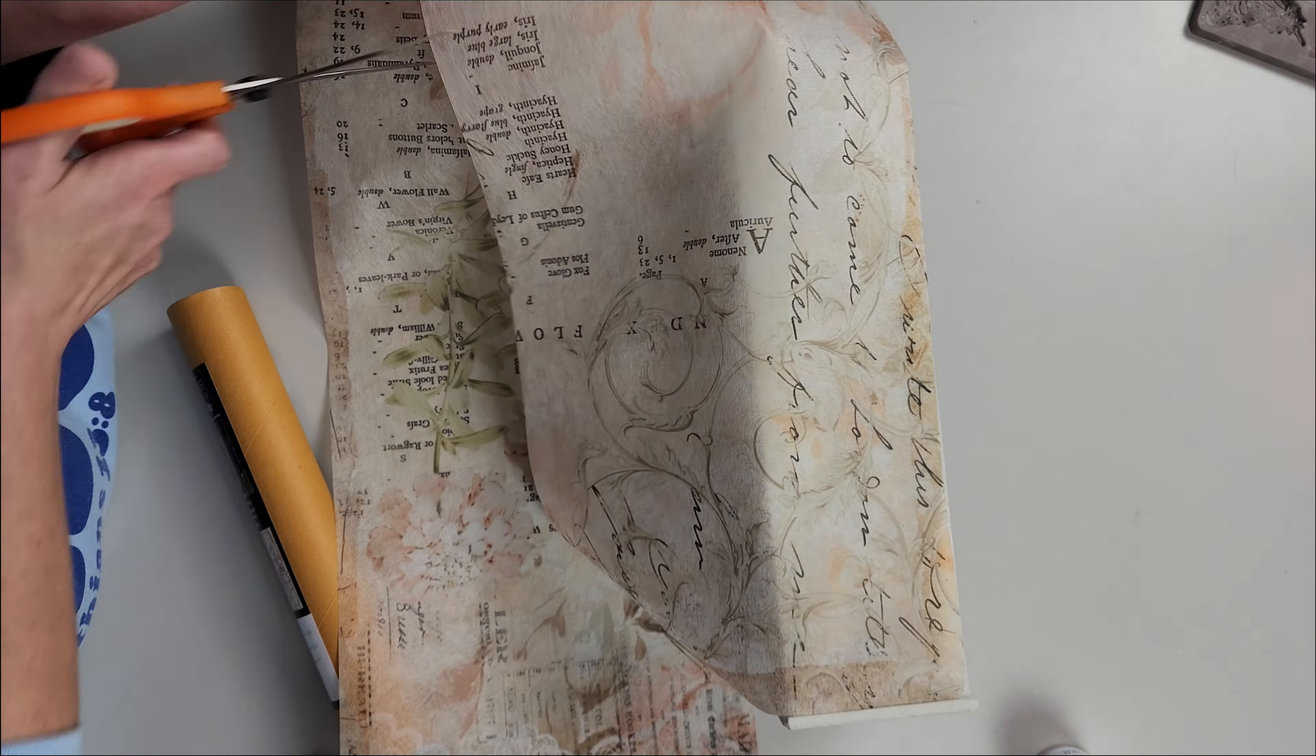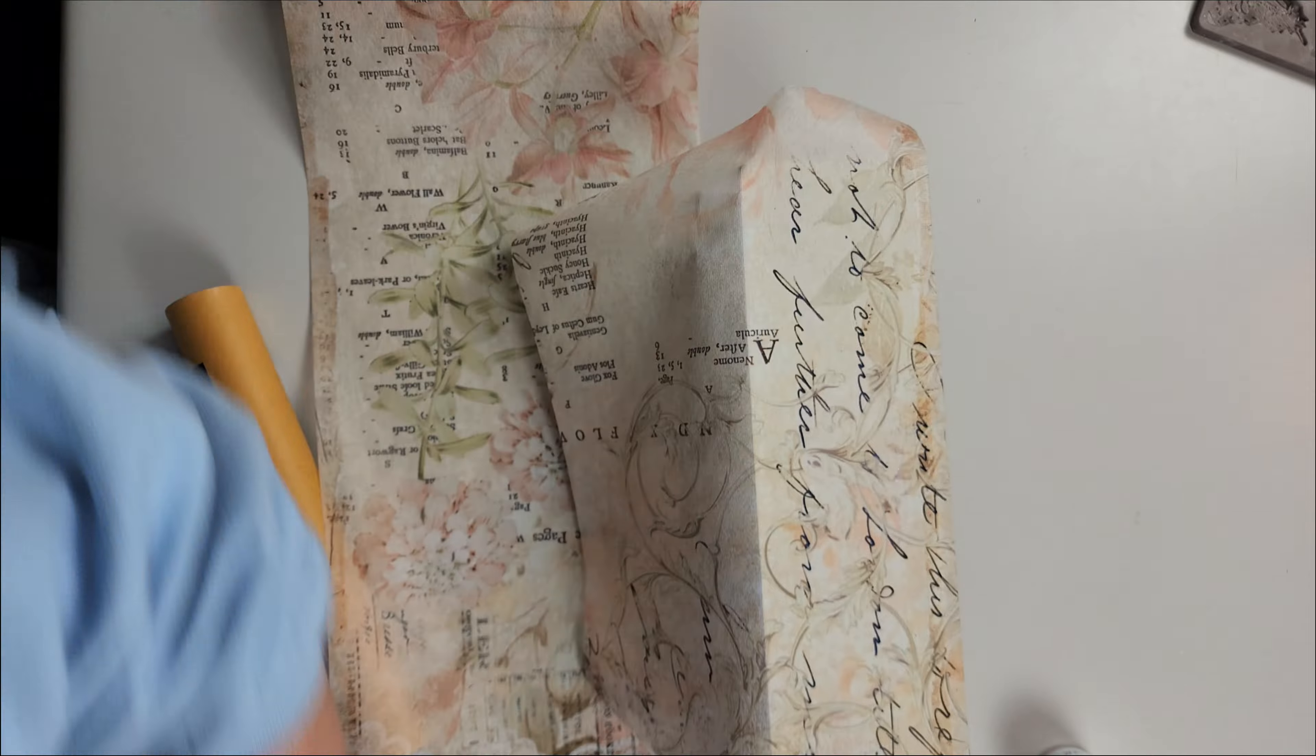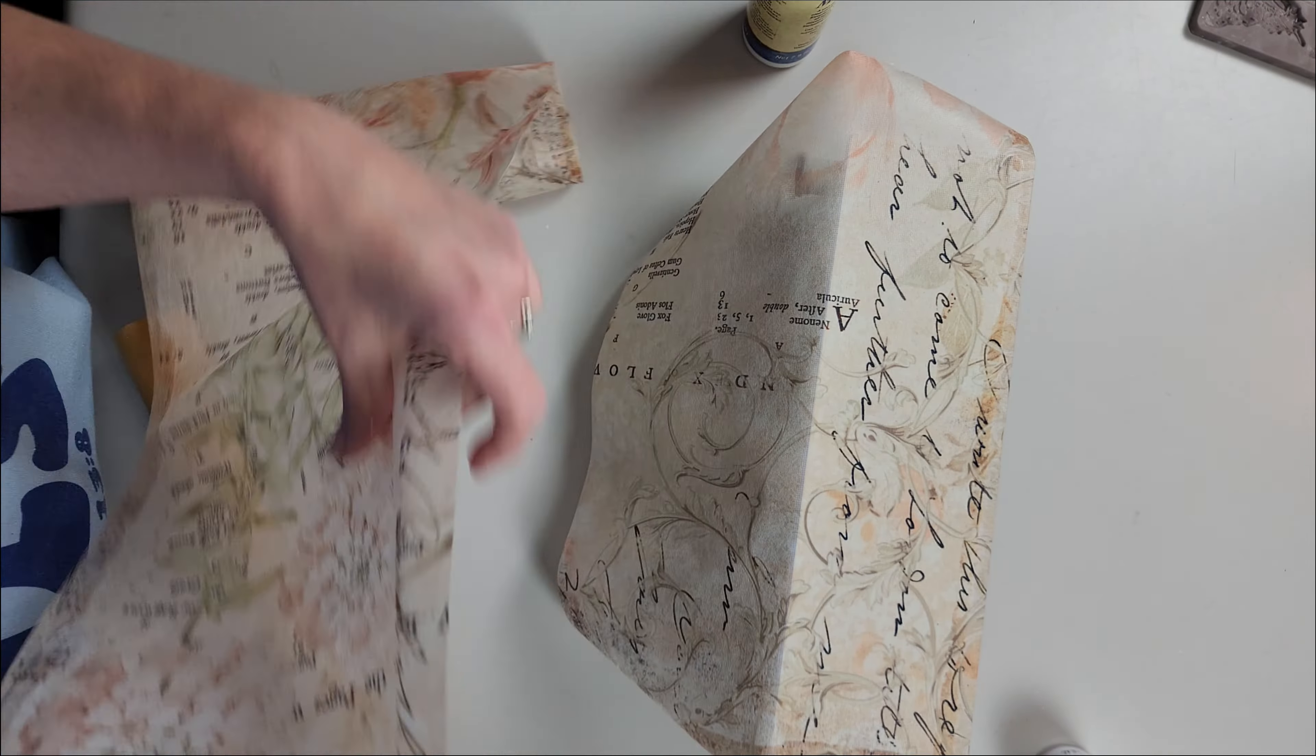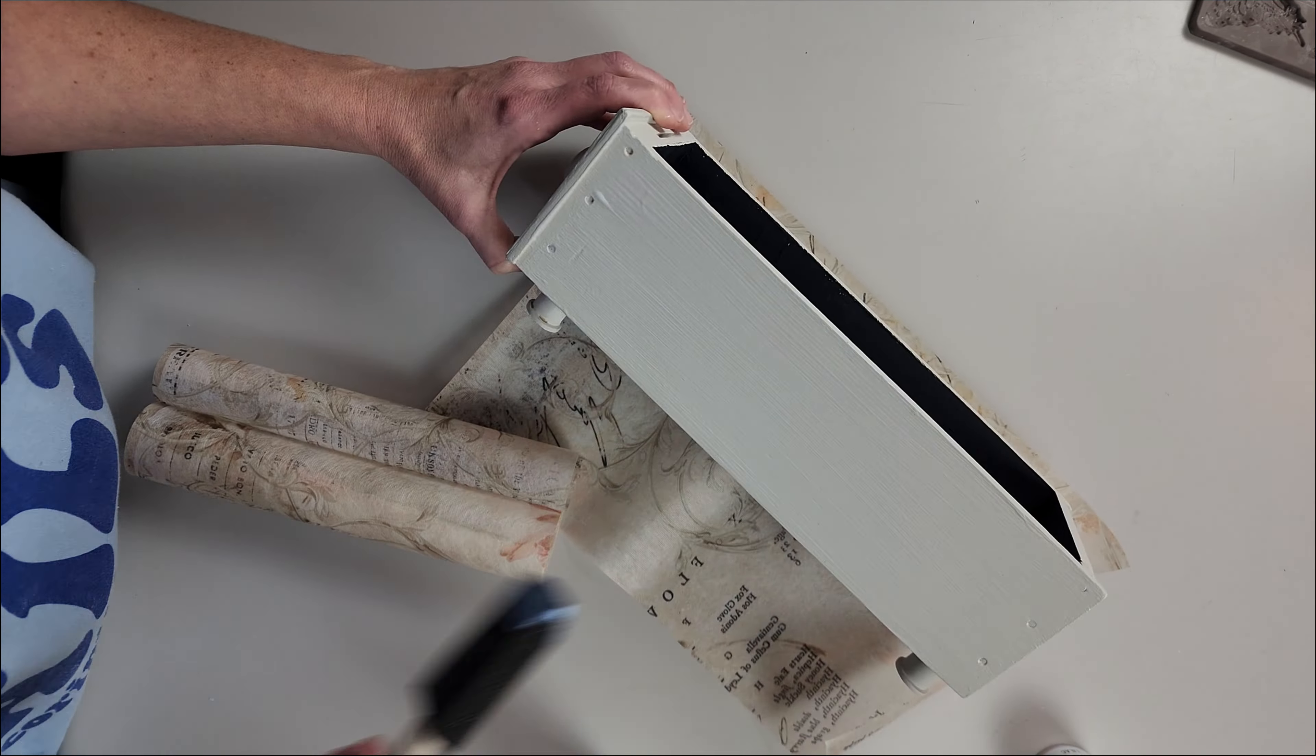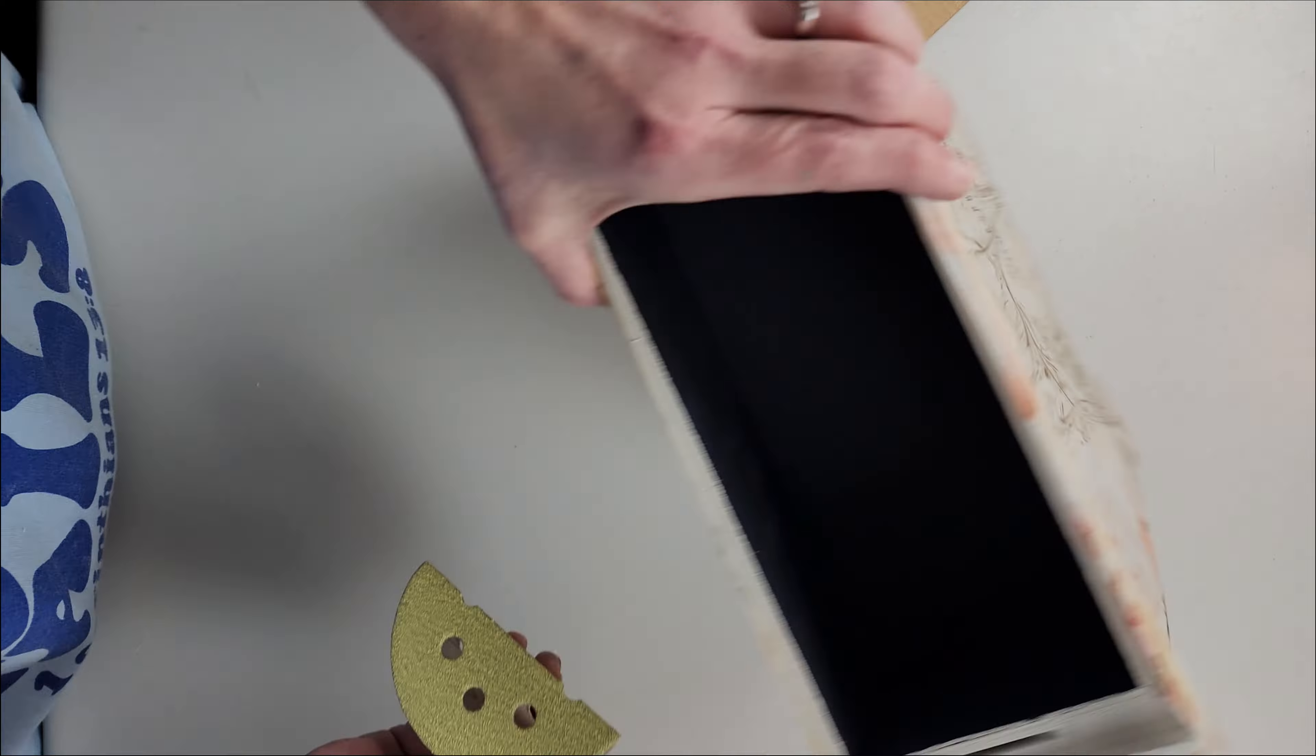So I have this decoupage paper, which I'll leave a link to in the description. I'm just using some mod podge and I'm going to decoupage it to the side of the drawer. I'm going to do both sides and then I'm going to set it to the side and let it dry. I really really like this decoupage paper.